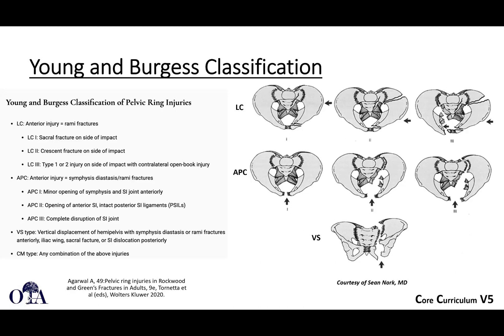Moving on to classification. The Young and Burgess classification is one you need to know; the other is the Tile classification. Young-Burgess is a mechanism-based classification derived from the Pennal classification, with three major injury patterns plus a combined mechanism pattern: lateral compression (LC), anterior-posterior compression (APC), and vertical shear, in order of severity.